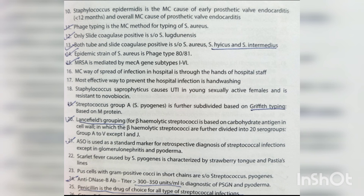The most common way of spread of infection in hospitals is through the hands of hospital staff. The most effective way to prevent hospital infection is hand washing. Staphylococcus saprophyticus causes UTI in young sexually active females and is resistant to novobiocin. Streptococcus Group A (Streptococcus pyogenes) is further subdivided based on Griffith typing based on M protein.